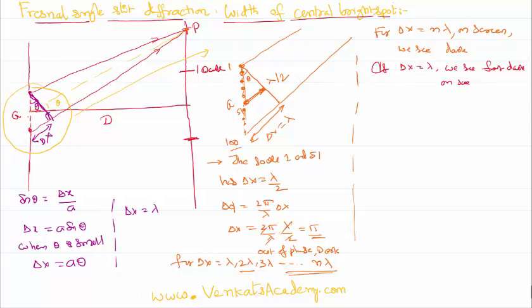We see the first dark for delta x equal to lambda. We can get the same at the bottom also. The first dark for delta x equal to lambda means to say this is the first dark. Before that there is no dark at all. That means in between, all these darks, it's going to be automatically bright.